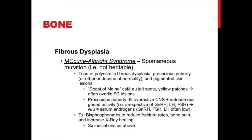McCune-Albright syndrome is a commonly tested syndrome involving fibrous dysplasia. It is a spontaneous, usually non-heritable mutation. The classic triad is: polyostotic fibrous dysplasia, precocious puberty or other endocrine abnormality, and pigmented skin lesions. These are usually café-au-lait spots described as the coast of Maine — very jagged — as opposed to the smooth coast-of-California café-au-lait spots of neurofibromatosis type 1. Patients may also have yellow skin patches, and the lesions classically overlie the region of fibrous dysplasia.